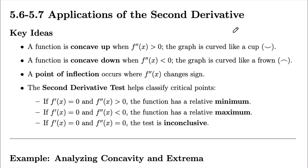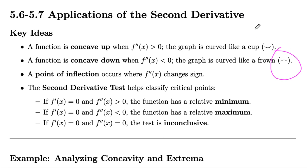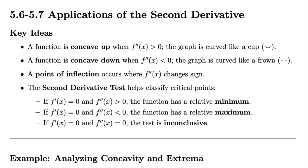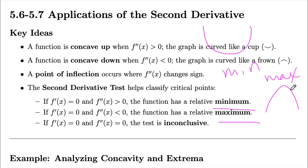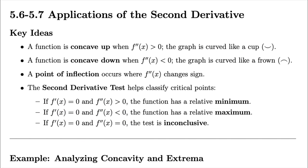Next up are applications of the second derivative. A function is concave up when the second derivative is positive — it looks like a smiley face or a cup. It is concave down when the second derivative is negative — it looks like a frown. A point of inflection is when the second derivative changes sign. The second derivative test helps us classify critical points: if the function is concave up at a critical point, it's a relative minimum; if concave down, it's a relative maximum. If both the first and second derivative equal zero, the test is inconclusive.